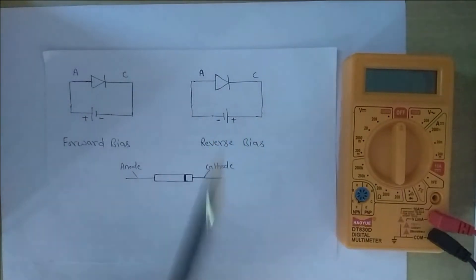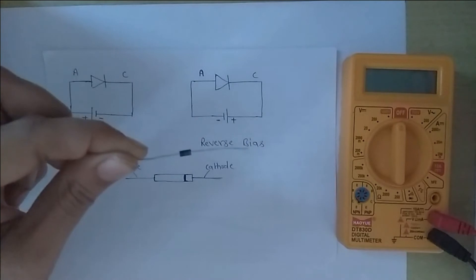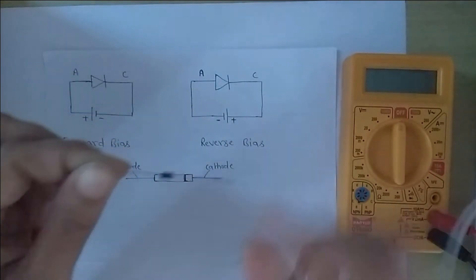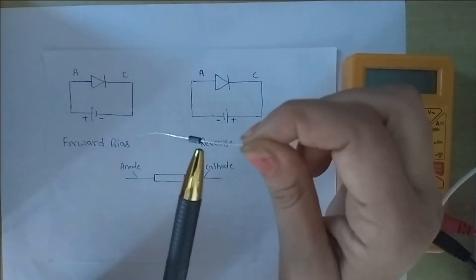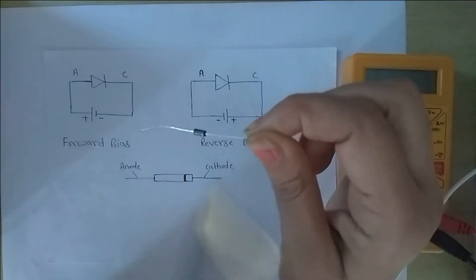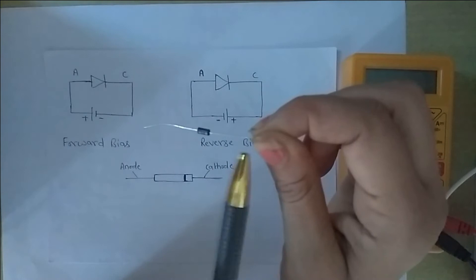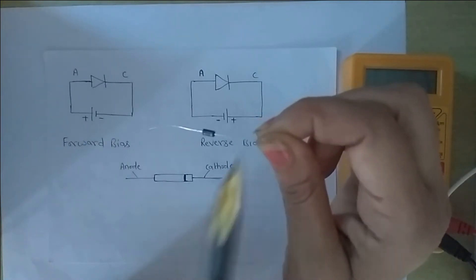This is our diode and there is a silver ring. The terminal which is on the silver ring side is the cathode terminal, and the opposite terminal is the anode terminal.